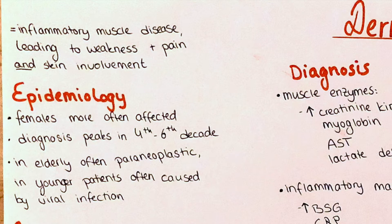In elderly patients, it is often of paraneoplastic origin, meaning it is due to some tumor formation. In younger patients, the cause is often viral infections. It is also thought that there is a genetic predisposition and an environmental role in the development of the disease.